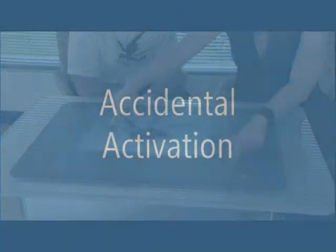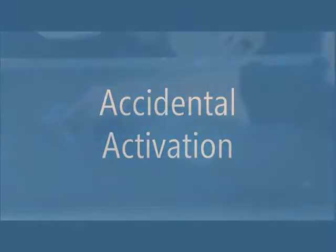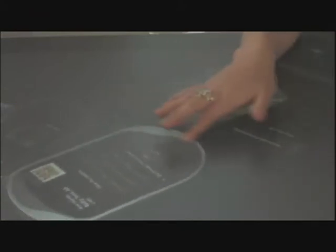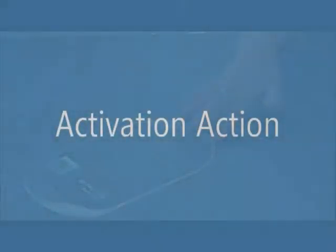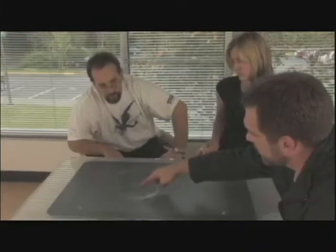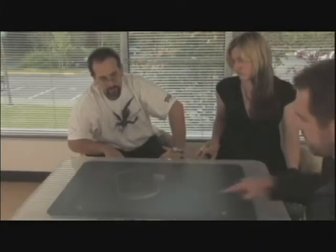This unexpected behavior can come from a number of sources. The first is accidental activation, which is especially prevalent on tablet and tabletop systems. Another source is activation action problems. Different touch technologies have different peculiarities with respect to activation. Resistive touchscreens require a great deal of pressure. Vision systems, such as Microsoft Surface, can sometimes activate before the user actually touches the surface.